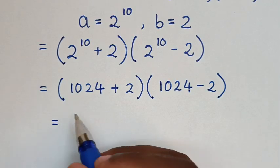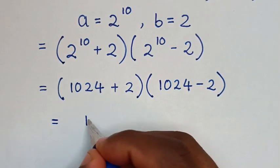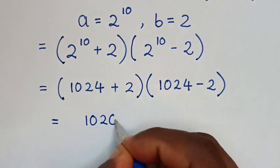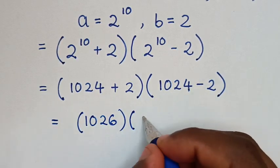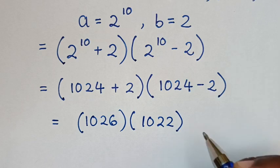So it will be equal to, we take this plus this, it will be 1026 times 1022.